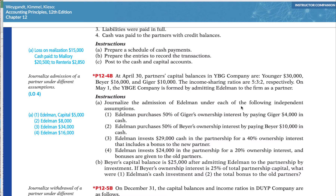In scenario one, Elderman purchases 50% of Geiger's ownership interest by paying Geiger $4,000 in cash. Let's say I have $10,000 in my capital account and my wife has $10,000, and Matt gives me $4,000 cash for 50% of my ownership. That cash that Elderman pays Geiger does not go into the company.